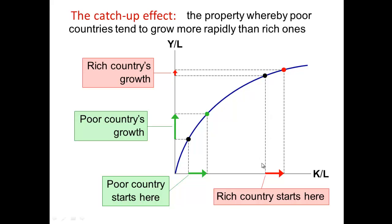But if a rich country is given the same amount, and they've already experienced their wealth, you'll see very little productivity. Graphically, we see this distance here is greater than it is for the rich country, showing that at this point we're beginning to see diminishing returns — whereas the poorer country still has a lot of room for growth and development.